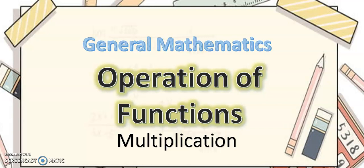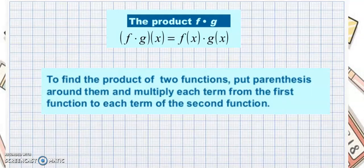Hi, for today's topic I will teach you about operation of functions, but on this video we will focus on multiplying functions. Here is the rule for multiplying functions: if you have f times g of x, it's the same as f of x times g of x. To find the product of the two functions, put parentheses around them and multiply each term of the first function to each term of the second function. Let's have an example.